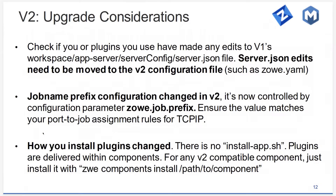Upgrade considerations: if you want to upgrade from V1 to V2, there might be a little manual work. server.json is gone, and we don't exactly know what edits have been made to it because it could have been plugins that added things. Check your server.json file to see if there are non-default values — those need to be moved over to zoe.yaml, which is pretty easy. Also, job name prefix configuration has changed in V2, so if you have TCP/IP rules for which jobs are allowed to use which ports, you'll need to update the value zoe.job.prefix in zoe.yaml to align with your existing rules.